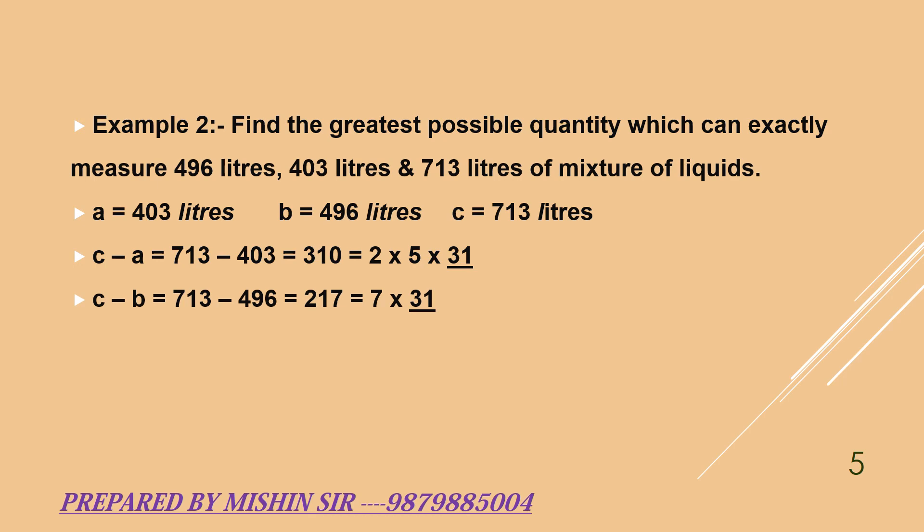Now we find B minus A which is equal to 496 minus 403 which is equal to 93 which on factorizing get 3 into 31. Now we underline the common term that is 31. Now HCF is 31 liters.